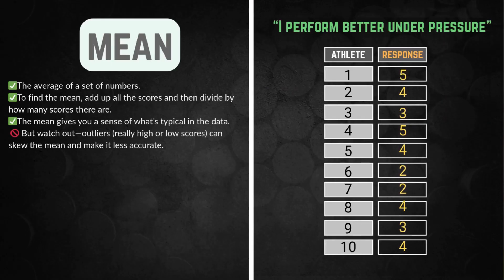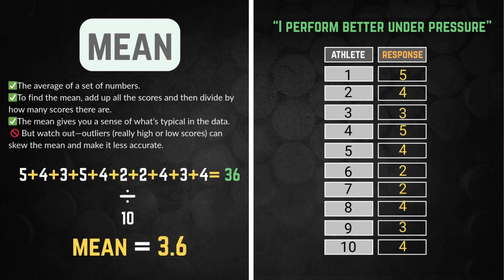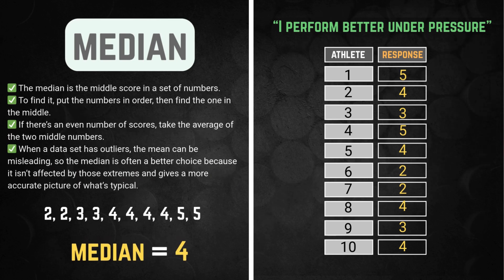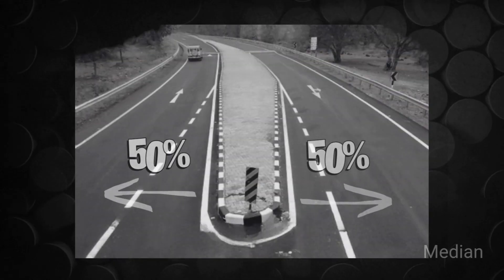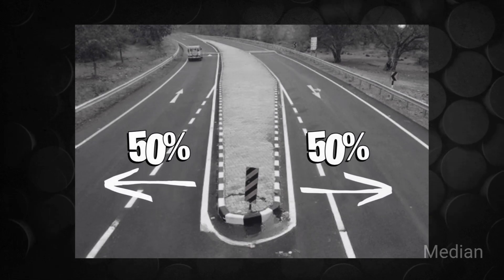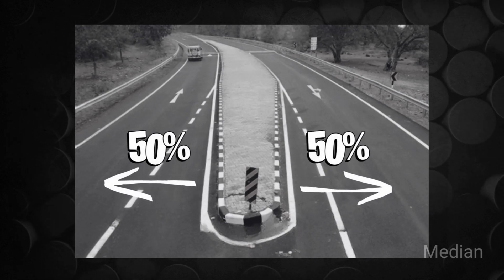Mean is the average. It's the number that tries to represent everyone, even if that one extreme score, looking at you number two, is dragging it down. Median is the middle number when the scores are in order. Here's an AP Psych memory hack: Picture a median like the divider in the middle of a road. It splits the data in half no matter how wild the scores are on the ends.